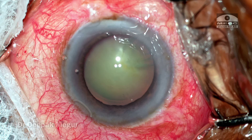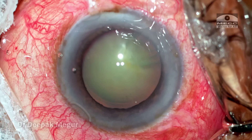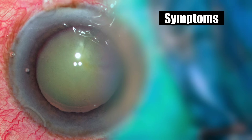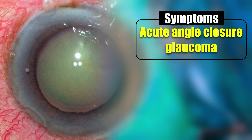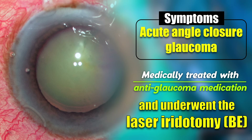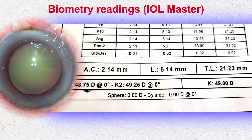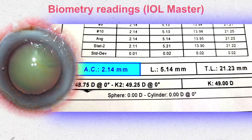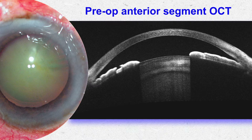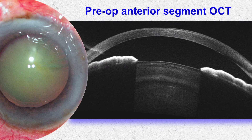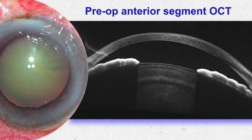Hi, this is Dr. Deepak Meghur and we have an interesting case today. She is a 73-year-old lady who presented with symptoms of acute angle closure glaucoma. She was treated medically and also underwent laser iridotomy in both eyes. These are her biometry readings. We can see that the anterior chamber is pretty shallow, and on anterior segment OCT we can clearly see that the lens is really thick, which could be a contributing factor for the angle closure.